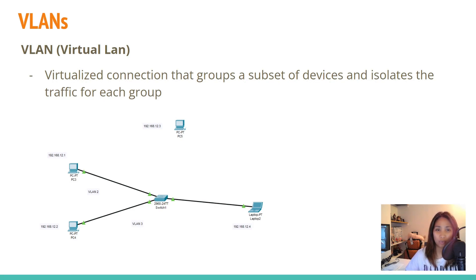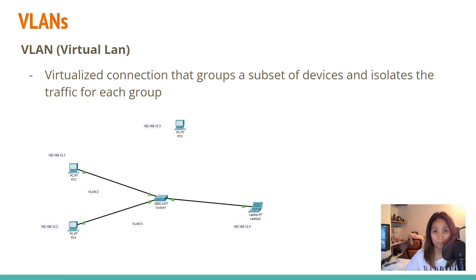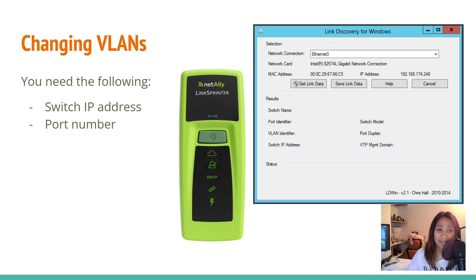A quick overview: VLAN stands for Virtual LAN, and it's a virtualized connection that groups a subset of devices and isolates traffic for each group. If you work on-site in IT, you typically manage the switch environment in the company and do a lot of switch configuration, especially VLAN changes. If you have no idea what a VLAN is, please learn that before watching, because I'm going to show you the practical application.